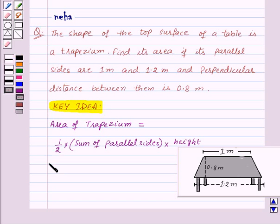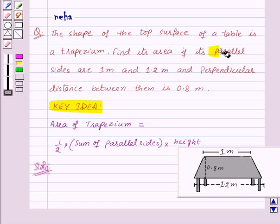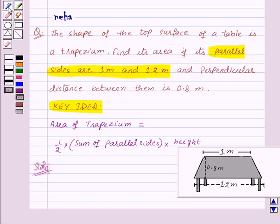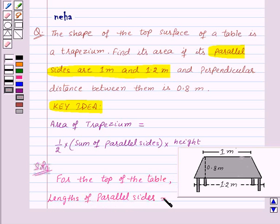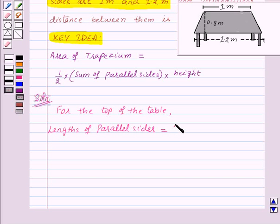Now let's see its solution. Here in this question we are given that the parallel sides are 1 meter and 1.2 meters. So for the top of the table, length of parallel sides is equal to 1 meter and 1.2 meter.